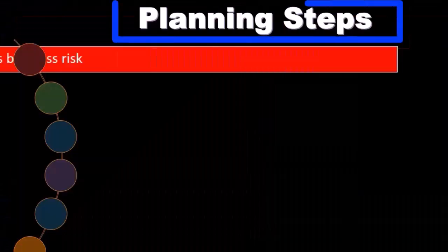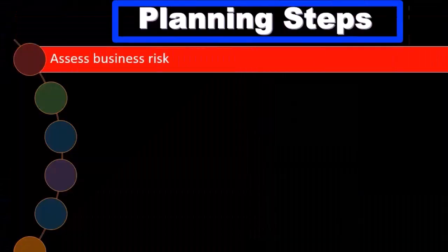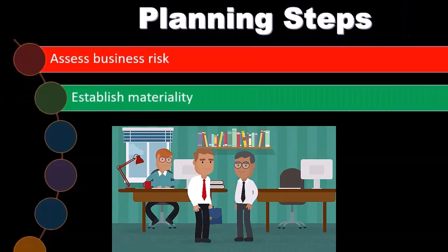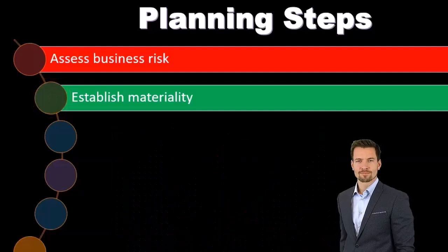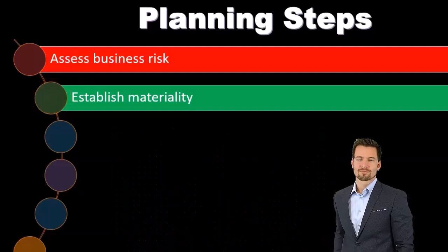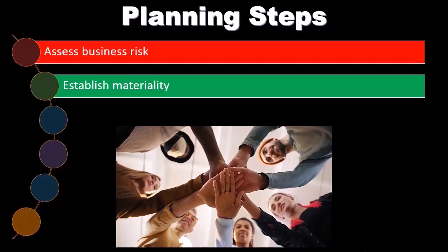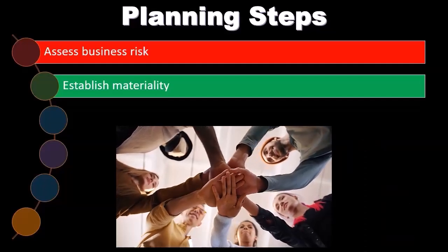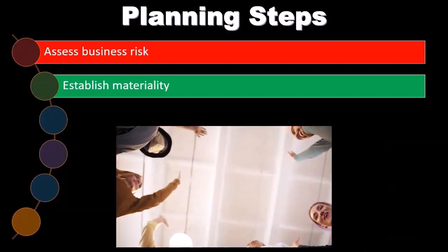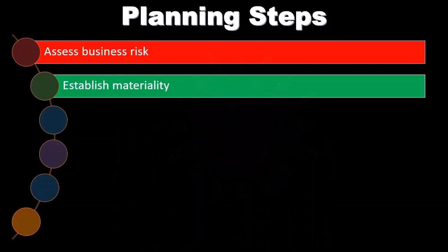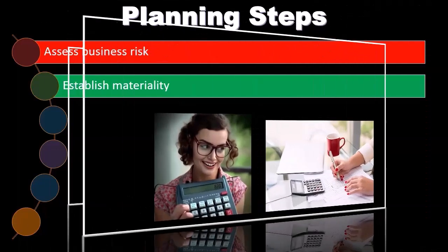The planning steps include assessing the business risk — so we're going to determine what the business risk is — and establishing materiality levels. We'll discuss more about materiality levels, but note we're always going to have to accept that we won't have 100% assurance; there's always going to be some risk.